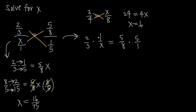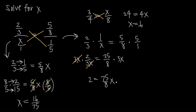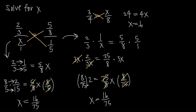Now we have fraction multiplication on both sides. 2 times 1 is 2 over 3x, equal to 5 times 5 is 25 over 8. If we multiply both sides by 3x, the 3x cancels on the left, leaving 2 equal to 75 over 8 times x. Then multiplying both sides by 8 over 75, the 75s and 8s cancel, leaving x equal to 16 over 75 — the same answer. Cross multiplication is probably easier with fewer steps.